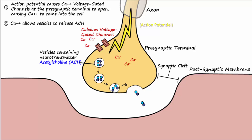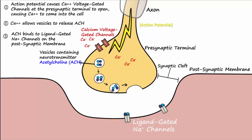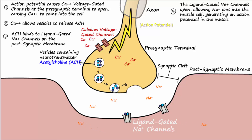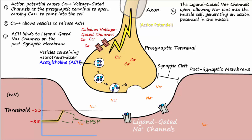In the synaptic cleft, the acetylcholine binds to receptors on ligand-gated sodium channels on the postsynaptic membrane. This binding causes the ligand-gated sodium channels to open, and because the sodium concentration in the synaptic cleft is higher than inside the cell, sodium ions rush into the muscle cell. This causes an excitatory postsynaptic potential, or EPSP, in the plasma membrane of the muscle cell. The EPSP causes an action potential to be generated that then travels down the plasma membrane of the muscle cell to ultimately cause muscle contraction.